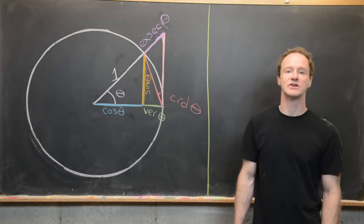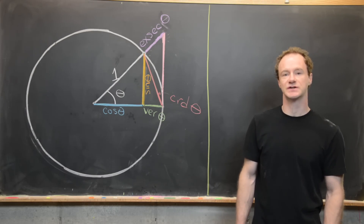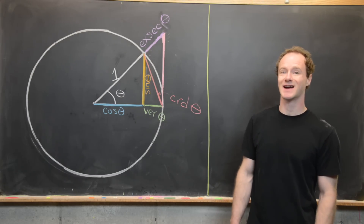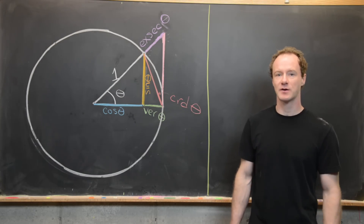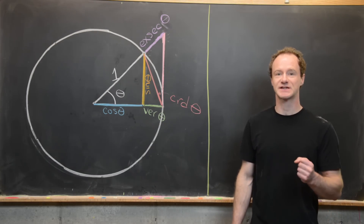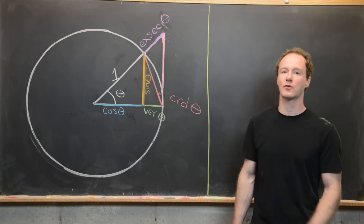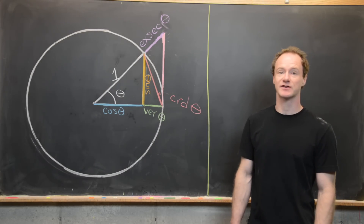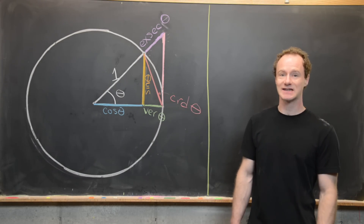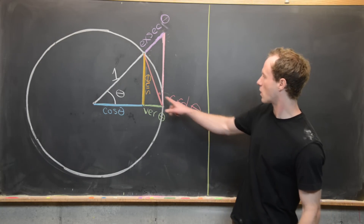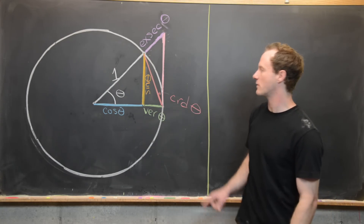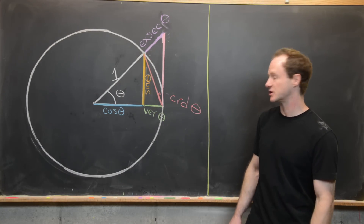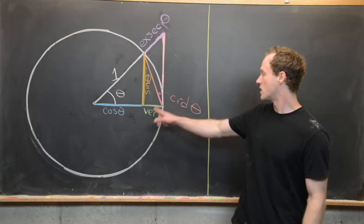Here we're going to look at three forgotten trigonometric functions. We all know about the cosine and the sine, but have you ever heard about the versed sine — the versine — or the exterior secant, the exsecant? You might have heard of the chord, but you probably didn't think of it as a trigonometric function. So that's what we're going to look at here.